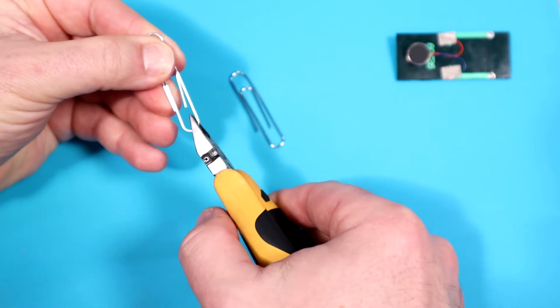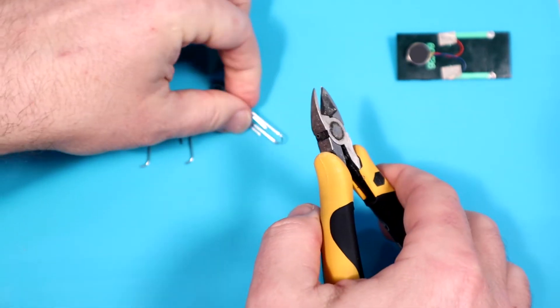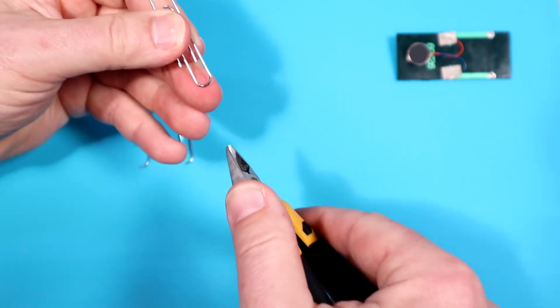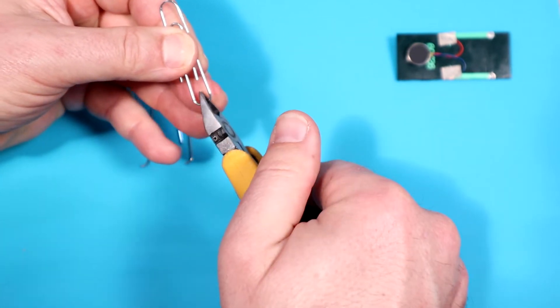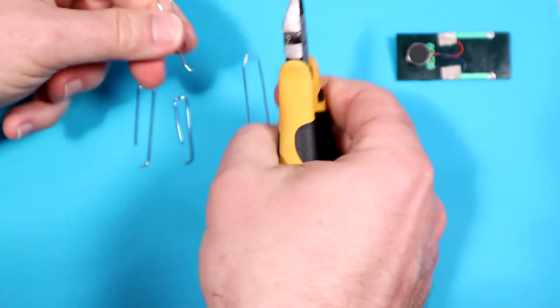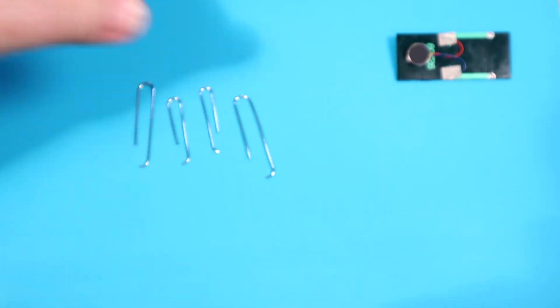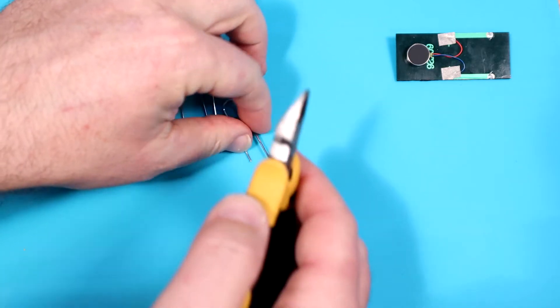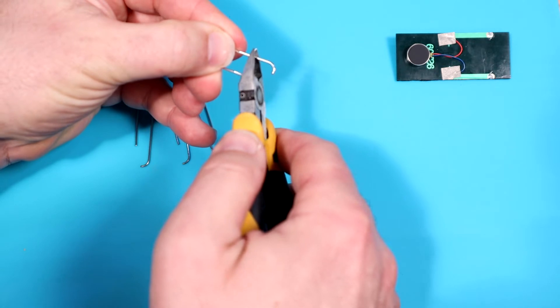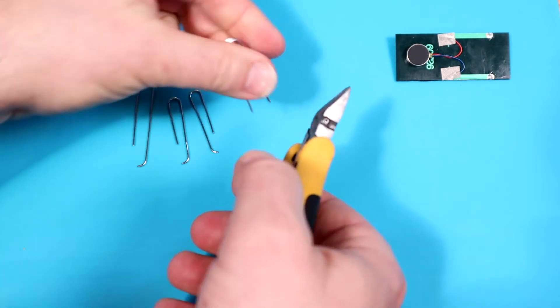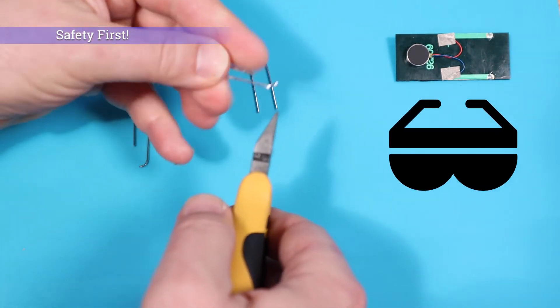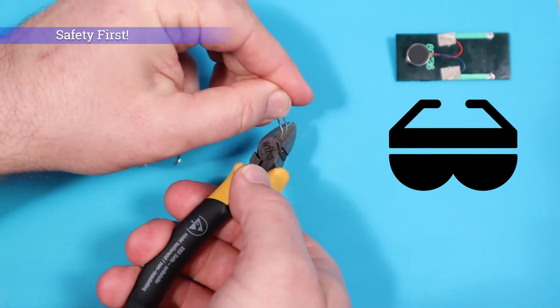Use the wire cutters to cut apart two paper clips at the narrow end. You should end up with two larger pieces and two smaller pieces that look about like this. Each piece will become a pair of legs for our cockroach, so snip off the extra so that the legs are even. Make sure to wear safety glasses as small pieces can go flying.